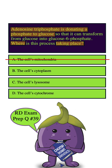How about B? Yes, the cytoplasm is the site where glycolysis takes place, including the step that's mentioned in the question, where ATP donates a phosphate to glucose to form glucose 6-phosphate. This is definitely the answer.